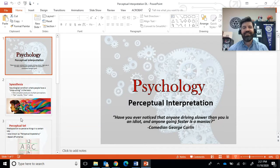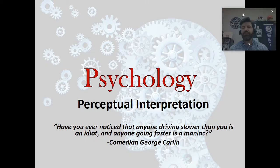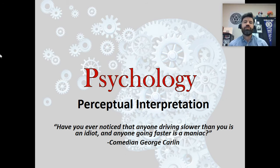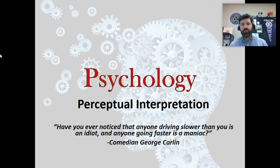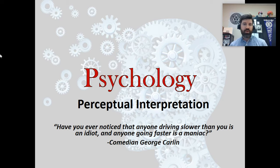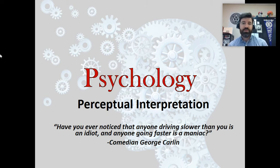Hey everyone, welcome back. Today we are going to be talking about perceptual interpretation. This is getting toward the end of our sensation and perception unit. We've talked about our sensations and how that is the detection of external stimuli from light waves, sound waves, chemicals in the air and chemicals in the food we eat, pressure against our skin. We've talked about how that information is sent to our brain, how our brain organizes that information, and then finally today, how do we interpret these different particular perceptions?